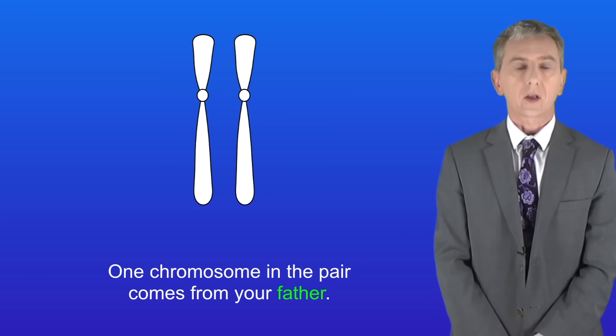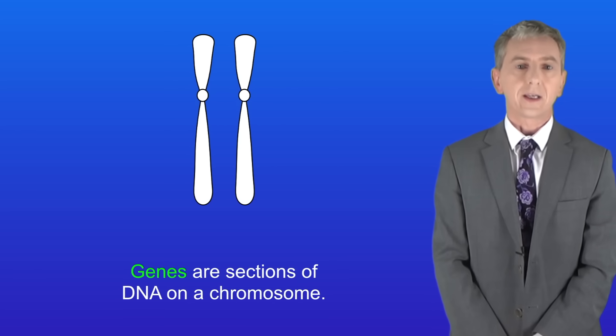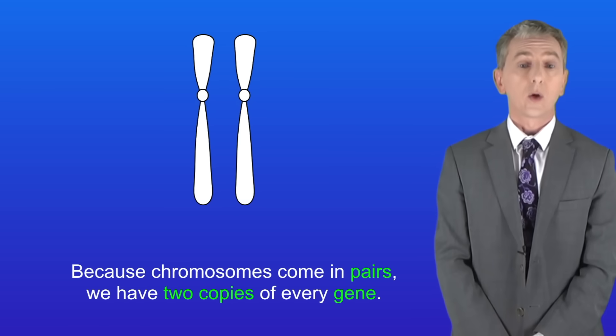Now a key fact that you need to learn is that one chromosome in the pair comes from your father and the other chromosome comes from your mother. We also saw that genes are sections of DNA on a chromosome and again because chromosomes come in pairs we've got two copies of every gene.